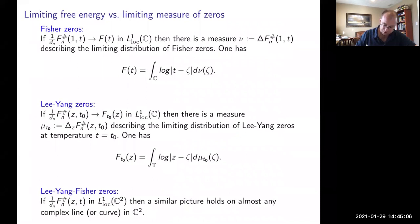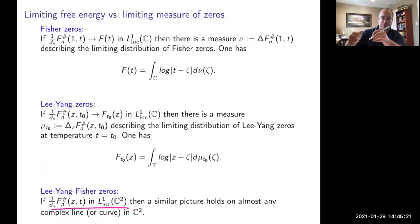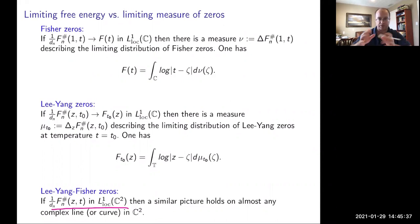For the Lee-Yang-Fischer zeros, you can ask about the limit in L^1_{loc}(C^2). If that holds, then on almost any complex line or curve in C^2 the zeros of the finite partition functions — suitably normalized with Dirac masses — converge to a limiting measure described by the logarithmic potential. The Lee-Yang-Fischer zeros thus organizes the Lee-Yang zeros and Fischer zeros into one single object.